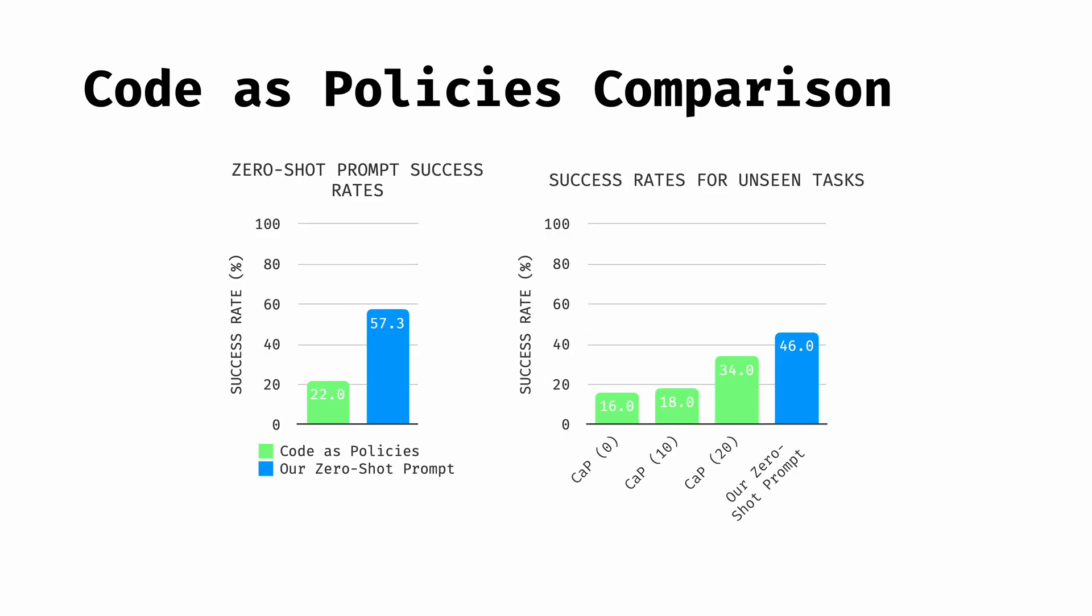Finally, we compare our zero-shot prompt to the prompt structure set out in Code as Policies, which is closest to our work. However, Code as Policies relies on predefined primitives and in-context examples, which can hinder generalizability.